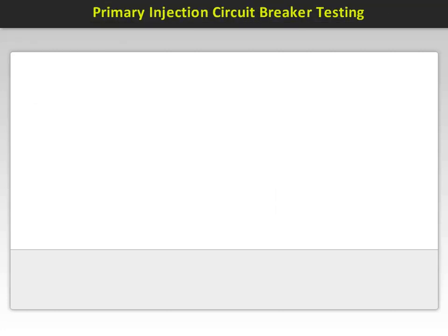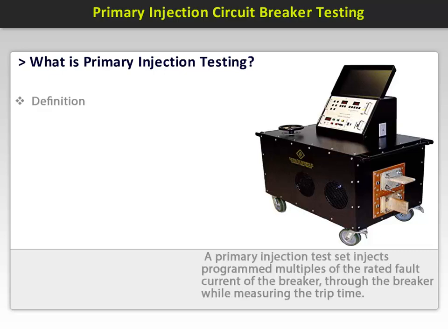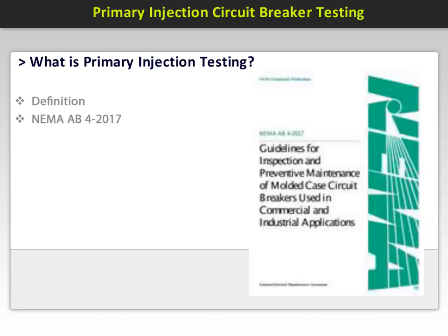Primary injection testing is the optimum standard for testing the performance and integrity of circuit breakers. Shown in this image is the ETI PI6000 Primary Circuit Breaker Test Set. A primary injection test set injects programmed multiples of the rated fault current of the breaker through the breaker while measuring the trip time. Primary injection testing should be in accordance with NEMA AB4-2017 Guidelines for Inspection and Preventive Maintenance of Molded Case Breakers used in commercial and industrial applications.